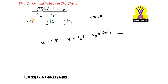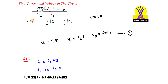Now apply KCL in the next step. At Node A, i1 is the incoming current and i2 and i3 are leaving. According to KCL, incoming currents equal outgoing currents, so i1 = i2 + i3, which gives i1 − i2 − i3 = 0. Let's consider this as Equation 2.